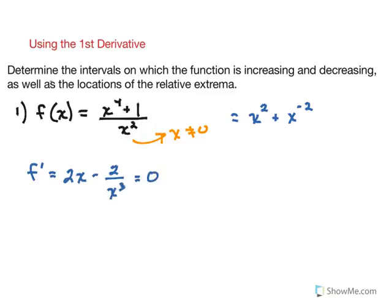Remember, we want to find where that derivative is equal to zero so that we can determine the location of our critical numbers. Critical numbers are also going to exist where the derivative does not exist, which in this case would be zero because of that x cubed in the denominator. But remember that from the original function, zero was not in the domain in the first place, so it really cannot be a critical number. So let's go ahead and solve this. Adding 2 over x cubed to the other side and cross-multiplying, I get 2x to the fourth equals 2. Dividing both sides by 2, x to the fourth equals 1, so x equals positive or negative 1. Those are my critical numbers.